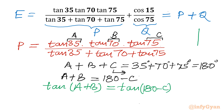Drawing the quadrant with 0, 90, and 180 degrees, the angle 180 minus C takes us into the second quadrant. In the second quadrant, sine and cosecant are positive only, and the remaining functions are negative. So tan(180 minus C) becomes minus tan C.